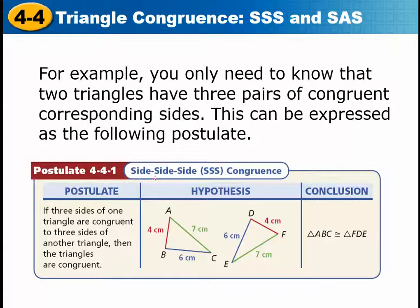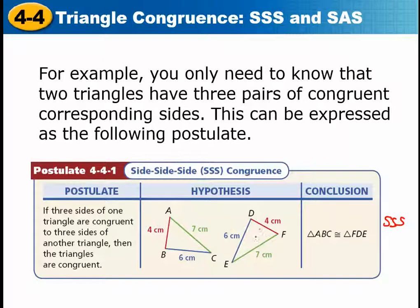There's a postulate that goes with this called the side-side-side congruence postulate, or SSS. It says if three sides of one triangle are congruent to three sides of another triangle, then the triangles are congruent. For your reason, just write side-side-side. So even if triangles are rotated or flipped, if one is 4, 6, and 7 centimeters and the other is also 4, 6, and 7 centimeters, those two triangles are congruent.